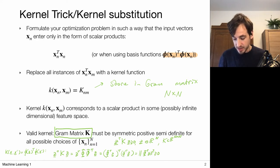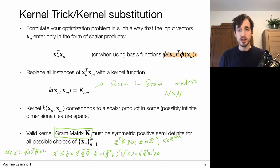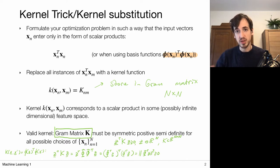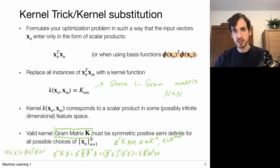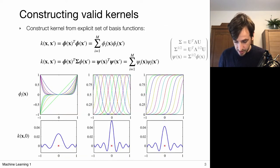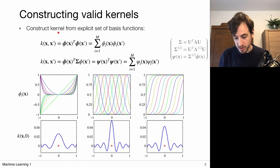In some cases it can be incredibly difficult to write a kernel in this explicit basis-function form. We can then adopt a different strategy for proving that a kernel is valid, by showing which manipulations we can apply to valid kernels to construct new kernels out of things we already know are valid. But if I have a kernel in this form, it is indeed a valid kernel.